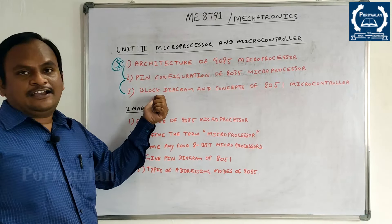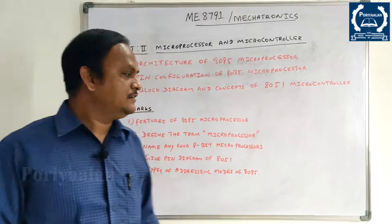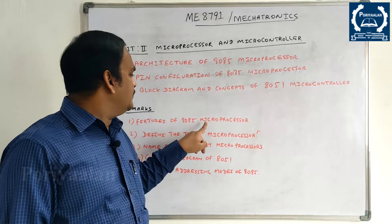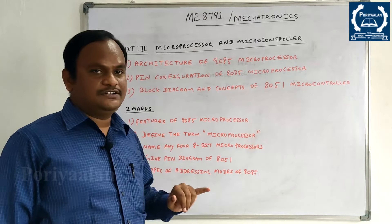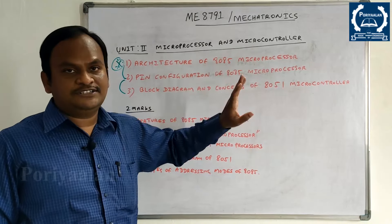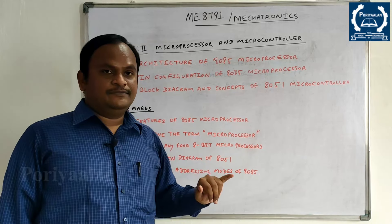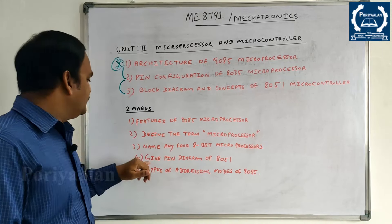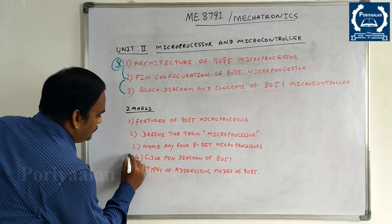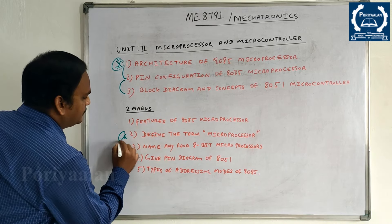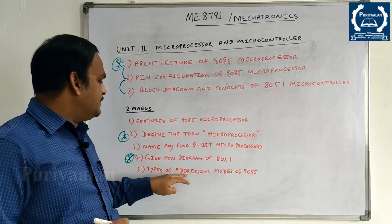The 2nd unit is guaranteed for full marks. Two-mark questions include: Features of 8085 Microprocessor, define the term Microprocessor, define 8085 Microprocessor for 13 marks definition, name any 4 eight-bit microprocessors, and give the pin diagram of 8051. Type of addressing modes of 8085 is also important.